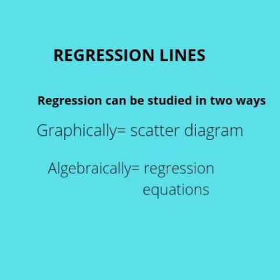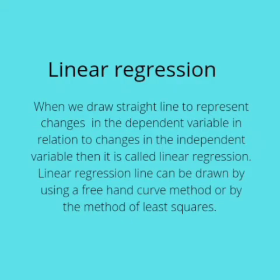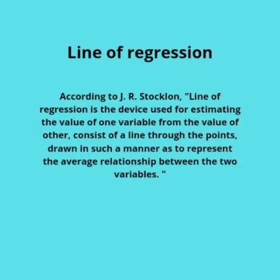Next, linear regression. When we draw a straight line to represent changes in the dependent variable in relation to changes in the independent variable, it is called linear regression. We use independent and dependent variables. When we plot changes in the diagram, we plot a straight line — a regression line. In linear regression, we use the regression line with the freehand curve method, or the method of least squares. The regression line is drawn to represent the average relationship between two variables.